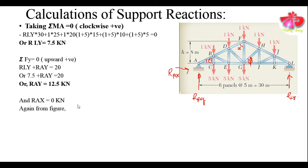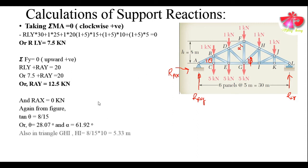Now we need to find certain angles in the given truss. The angle θ is made by member AF with the horizontal. We find θ = tan⁻¹(8/15), which gives θ = 28.07 degrees. The complementary angle α = 61.92 degrees. Likewise, in triangle GHI, we can find the height of HI using similar triangles — considering the whole triangle FGL and the small triangle HIL.